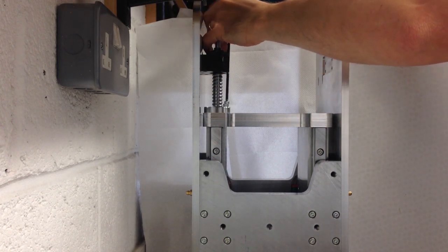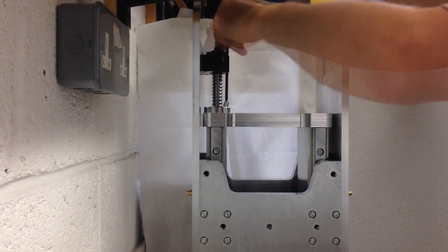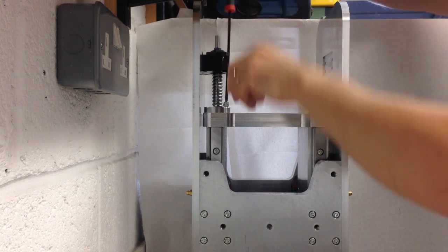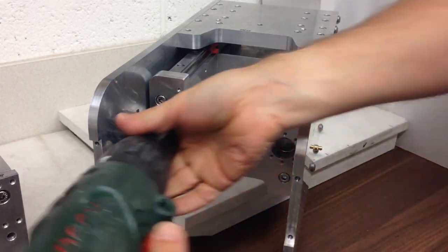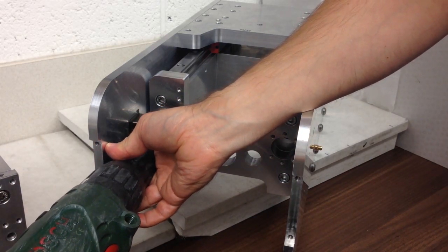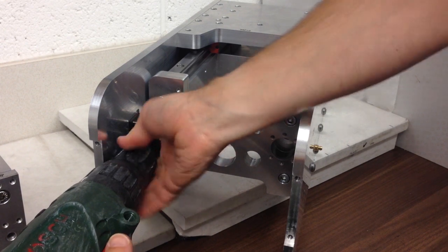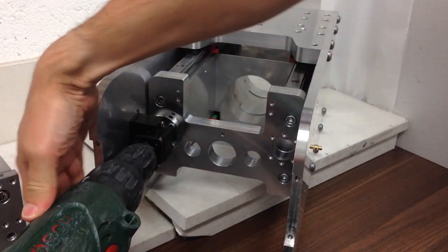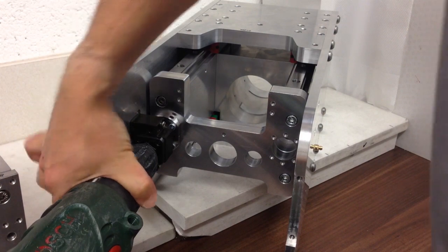So here we are just putting the ball nut in. Now we're putting it loose at this point because it's not necessarily aligned, so we've got the axis all lined up and everything, so now we need to align the ball screw to that axis.